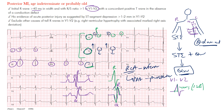Why is the T wave discordant? There's something called memory T waves. Memory T waves are inverted T waves that tend to stick around — they may actually stick around for years and maybe never go away. They may eventually flatten out and revert back to normal, but that's something you can see in these patients.